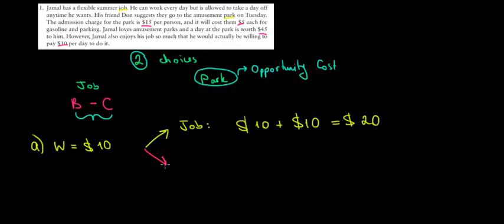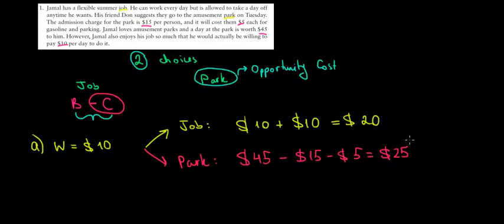Now let's look at the opportunity, the other option. If we go to the park, we have a benefit of $45 by having the fun, but then we have to pay for getting into the park $15 and $5 for the gas. So we subtract the costs: minus $15, minus $5. That's equal to $25.